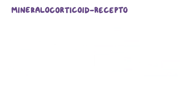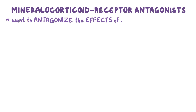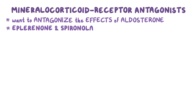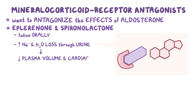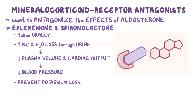In contrast to mineralocorticoid receptor agonists, mineralocorticoid receptor antagonists are used in conditions where we want to antagonize the effects of aldosterone. Common medications include eplerenone and spironolactone, which are typically taken orally. These medications compete with aldosterone for receptor sites in distal convoluted tubules, thereby increasing sodium and water loss through the urine. This leads to decreased plasma volume and cardiac output, and eventually lower blood pressure. At the same time, they prevent potassium loss — thus they are also known as potassium-sparing diuretics.